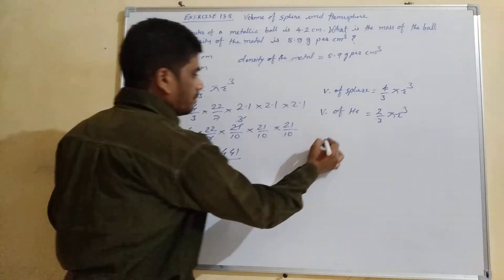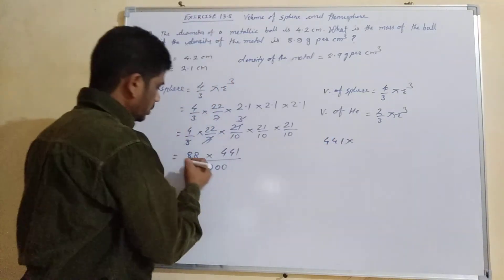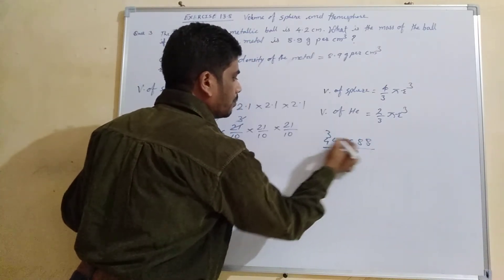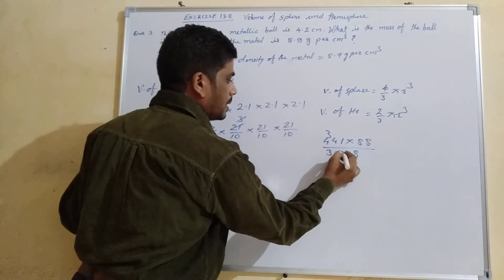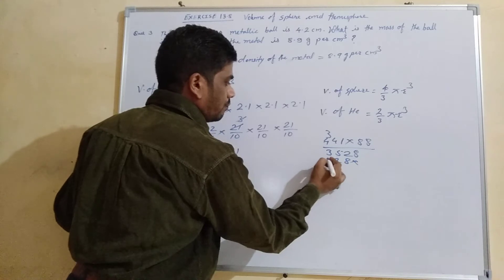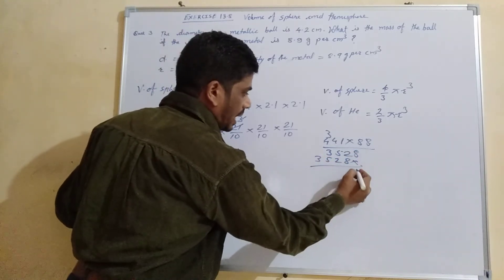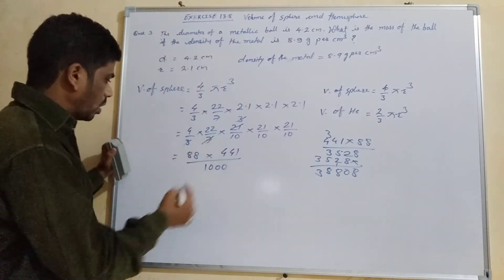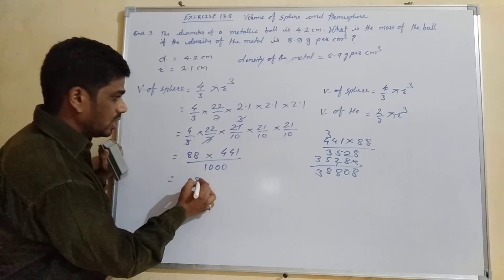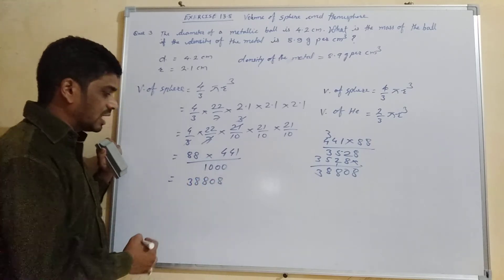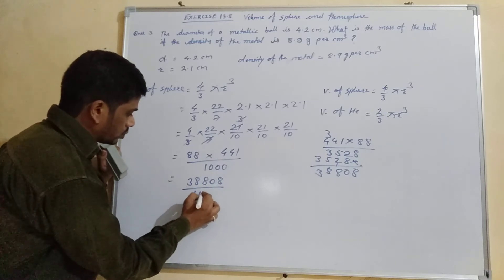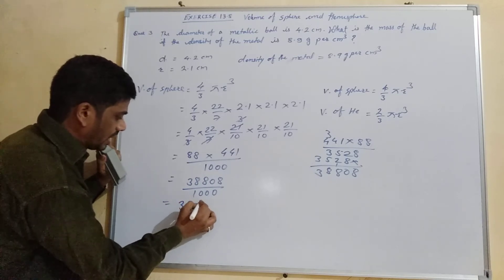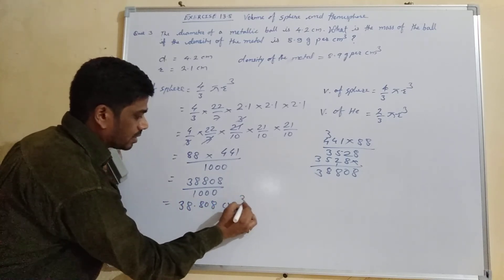Now computing 441 × 88: 8 × 1 = 8, 8 × 4 = 32 carry 3, 8 × 4 = 32 + 3 = 35. We get 3528, then add 80 × 441 = 35280, giving 441 × 88 = 38808. Dividing by 1000 shifts the decimal three places, so the volume equals 38.808 cubic centimeter.